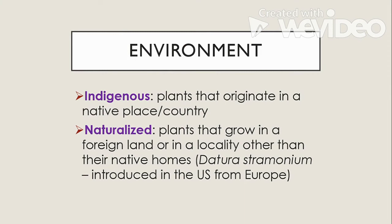Lastly, we have the environment. Under this, we have indigenous plants — those that originate in a native place or country — and naturalized plants, which are plants that grow in a foreign land other than their native homes. For example, Datura stramonium was introduced in the US but is originally from Europe.